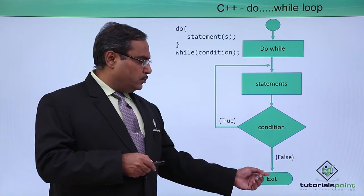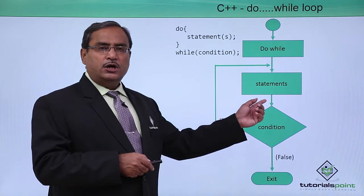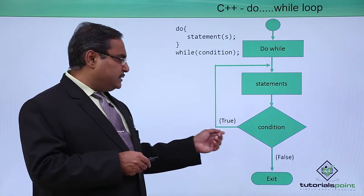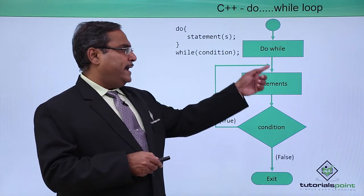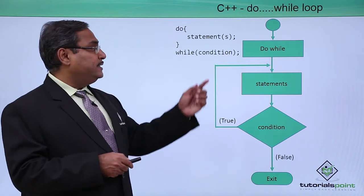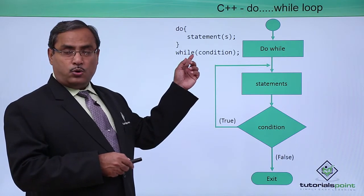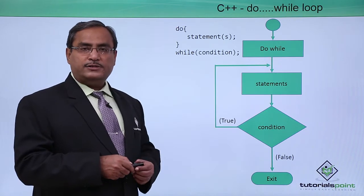If the condition is false, then the control will come out and exit from this do-while body. Otherwise, if the condition is true, then again the statements are getting executed. The required sample code has been written side by side for your understanding.